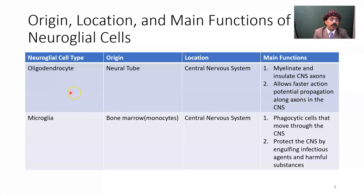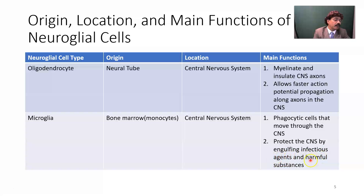Microglia originate from bone marrow monocytes, are located in the central nervous system, and their main function is as phagocytic cells that move through the central nervous system, protecting the CNS by engulfing infectious agents and harmful substances.